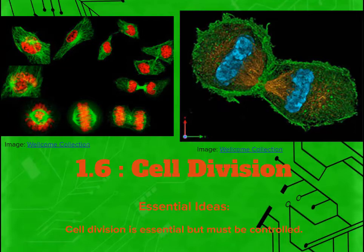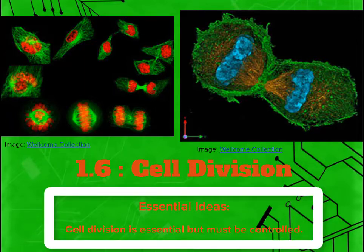It was a pretty wicked poem, and it leads us to our topic for today. Remember in the last video we talked about the origin of cells? Like cells give rise to other cells, Louis Pasteur, and all those ties to the cell theory. We've reached the point we need to know how this exactly occurred. Our final subject in topic 1 is 1.6, all about cell division. The essential idea here is that cell division is essential, but must be controlled.